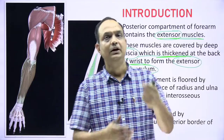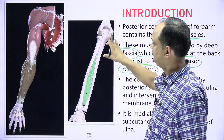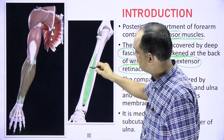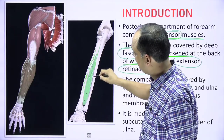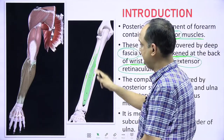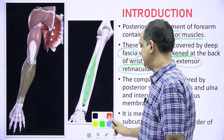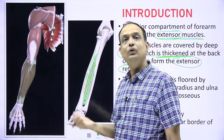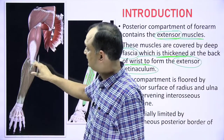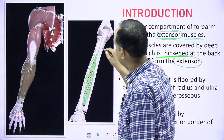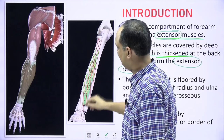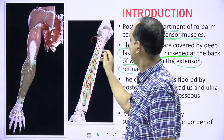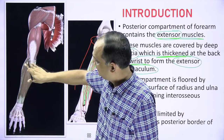The posterior compartment is floored by the posterior surface of the radius, ulna, and the intervening interosseous membrane. The posterior surface of the radius, posterior part of the ulna, and the posterior part of the interosseous membrane together form the floor. These muscles lie on the posterior aspect of the forearm and are all covered by the deep fascia.